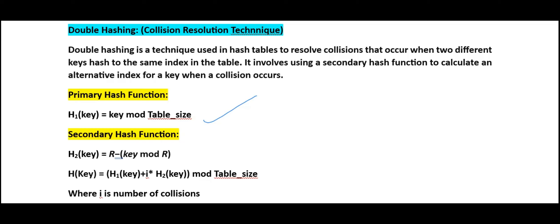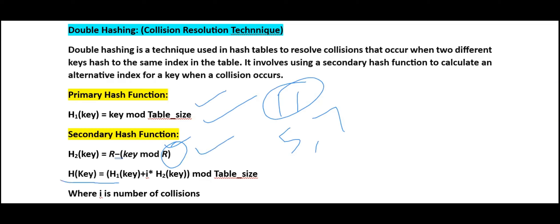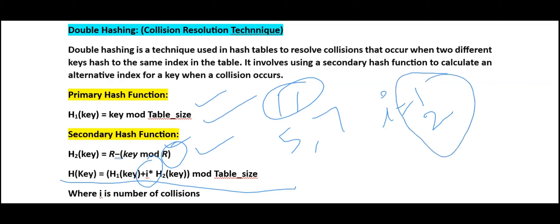The secondary hash function is: h2(k) = r − (key mod r), where r is a prime number less than the table size. For example, if the table size is 11, then r could be 5 or 7. In case of collision, we calculate h1(k) and h2(k), then apply the formula: (h1(k) + i × h2(k)) mod table_size, where i is the number of collisions that have occurred. We keep incrementing i until we find an empty slot.